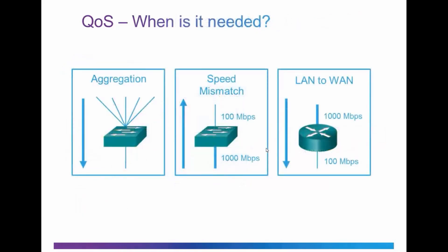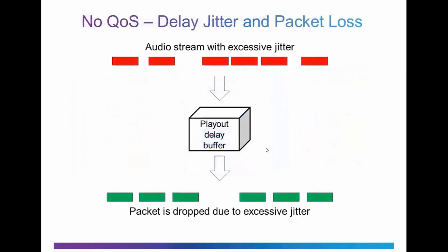When do we need QoS? We need QoS at points in the network where congestion is experienced. This could be points where you have an aggregation of many links — many computers or users all having to go up a single uplink or across a single wire. You can also have situations where there's a speed mismatch, going from a faster link to a slower link, and also as you cross from a LAN to a WAN or from the WAN to the LAN across a gateway router.